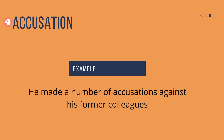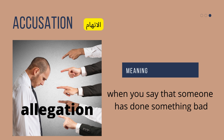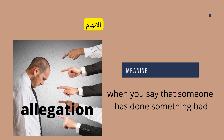Accusation — the verb is to accuse. Here is an example: he made a number of accusations against his former colleagues. Accusations can be wrong or correct — we don't know; they are just accusations. Another word for accusation that you should remember is allegation, which is mostly not correct. The meaning is: when you say that someone has done something bad, that's an accusation.